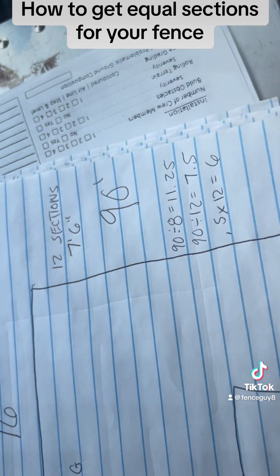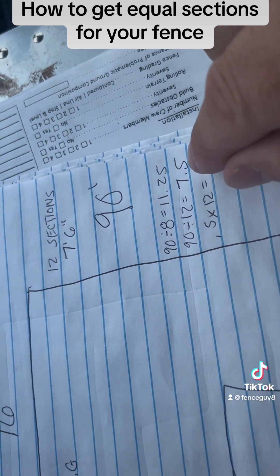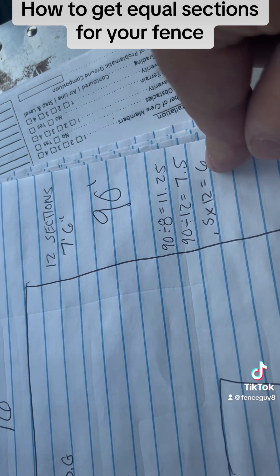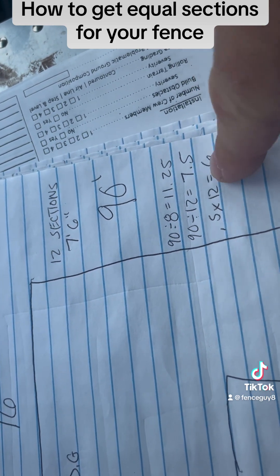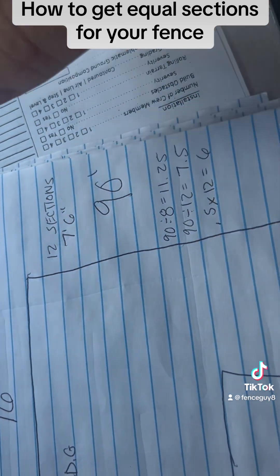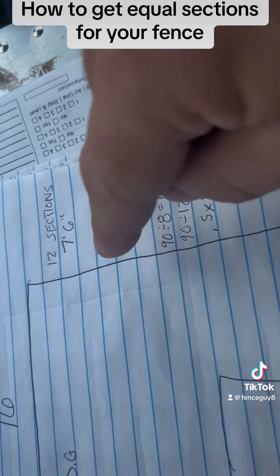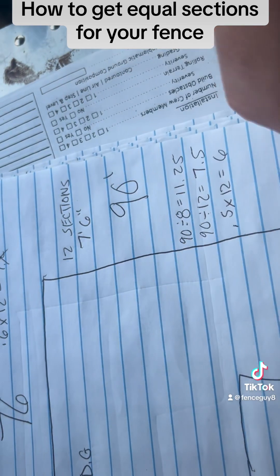So then I take 0.5, multiply it times 12. That's 6 inches. So 7.5 is 7 foot 6 inches. So that's where this is going to be 12 sections coming down. I'm going to mark my posts at 7 foot 6 inches.